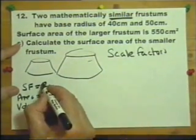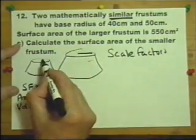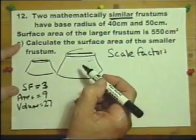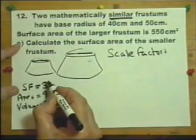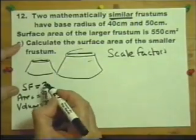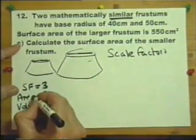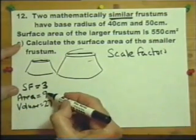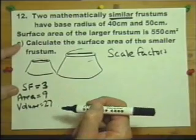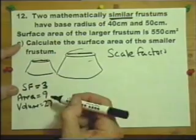The scale factor is only talking about distances like the radius, the diameter, the height, and the circumference. If the scale factor was three, all of those things would be multiplied by three. Any area would be increased by nine times, which is three squared, and any volume would be increased by 27, which is three cubed.